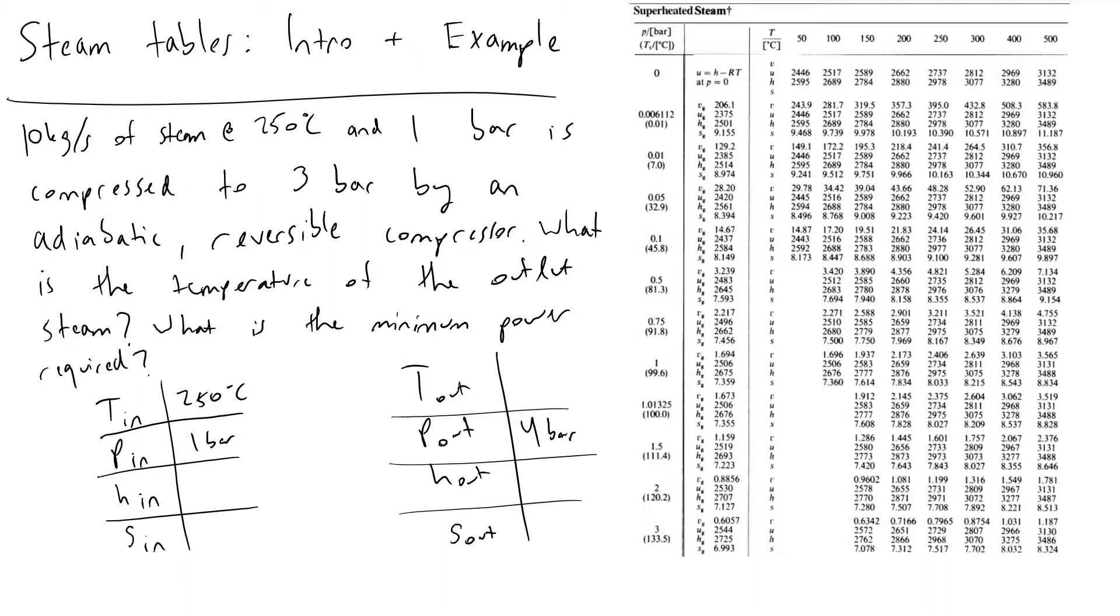What I'm going to do in this video is introduce how we can use steam tables in practice and go through an example problem in which we're trying to determine how much power will be required ideally by a compressor to make steam that has been heated to 250 degrees C be compressed from one bar to three bar by an adiabatic reversible compressor.